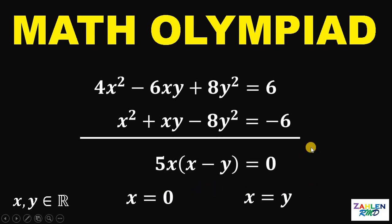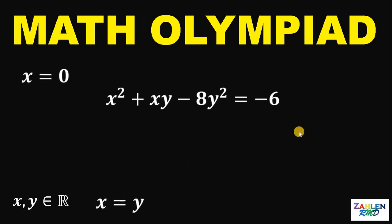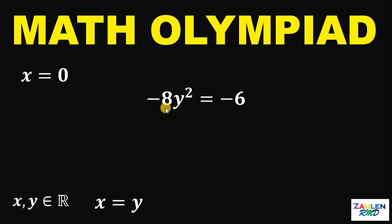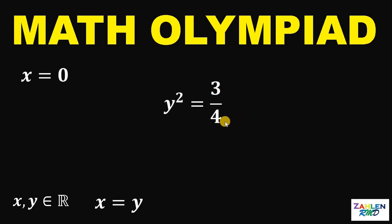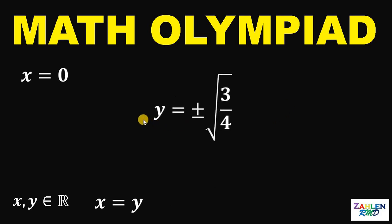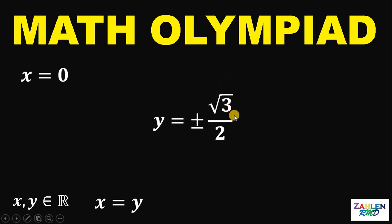To solve for the values of x and y, we will use the second equation. For Case 1, x equals 0: x squared is 0 and xy is also 0, so this gives us negative 8y squared equals negative 6. Dividing both sides by negative 8 gives y squared equals negative 6 over negative 8, which simplifies to 3 over 4. Taking the square root of both sides gives y equals positive or negative square root of 3 over 4, which simplifies to positive or negative square root of 3 over 2.